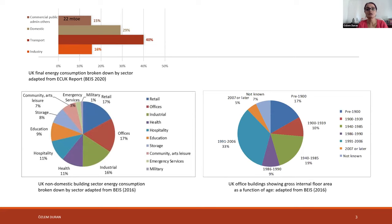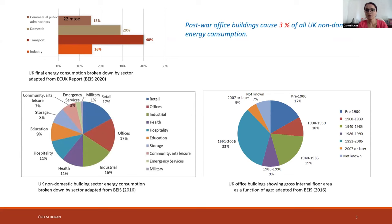19 percent of the stock was built between the 1940s and 1985 — before the first major regulation on energy performance of non-domestic buildings came in 1984. This specific building stock — so-called post-war office buildings — is quite eligible for retrofitting because they are excessively high energy consumers and not yet at the end of their lifespan. They form about 3 percent of UK non-domestic energy consumption, and I'll come back to this figure shortly.